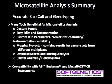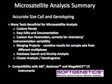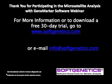In summary, GeneMarker provides accurate size calling and genotyping. Many tools beneficial for microsatellite analysis include customized panels, easy edits and documentation, custom run parameters that correct for chemistry and instrumentation variability, the ability to merge projects and combine results for sample sets from different multiplexes, and use these results in database searching, kinship analysis, and cluster analysis to draw dendrograms. GeneMarker is also compatible with all major capillary electrophoresis systems, including ABI, Beckman, and Megabase CE instruments. Thank you for participating in the microsatellite analysis with GeneMarker software webinar. For more information or to download a free 30-day trial, go to www.softgenetics.com or send an email to info@softgenetics.com.